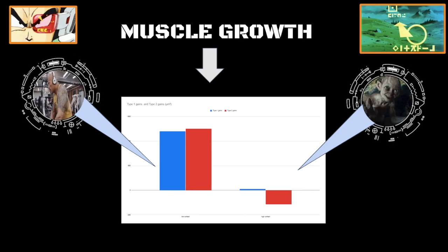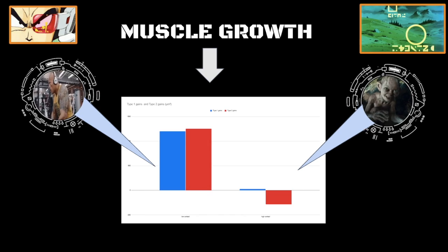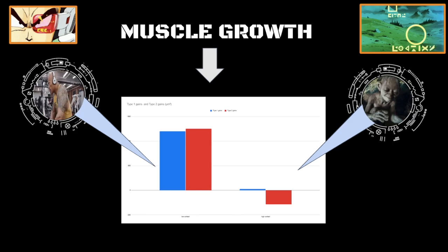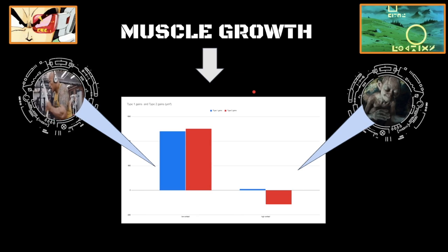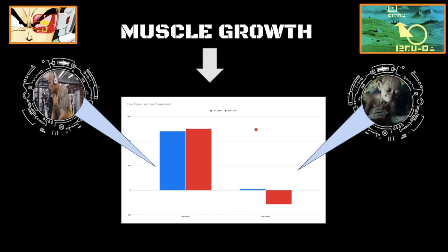All right, so moral of the story, keep cortisol low through any means necessary. You're never going to reduce it to zero, obviously. In fact, you don't want it at zero because it has important uses in the body. Even protein breakdown is not entirely bad, but again, that's for a completely different video. You don't want it at zero, but in fact, you're never going to get cortisol at zero. But you definitely want to minimize it if your goal is to maximize muscle growth.